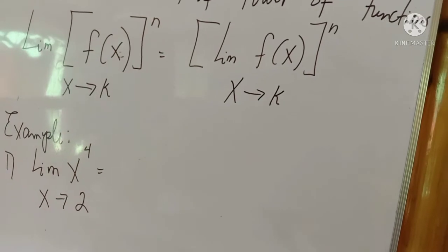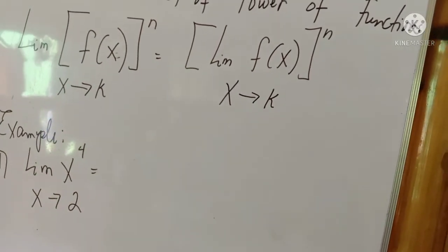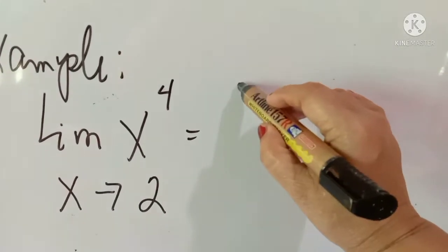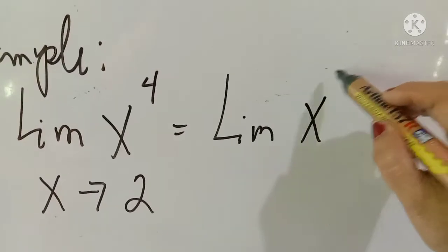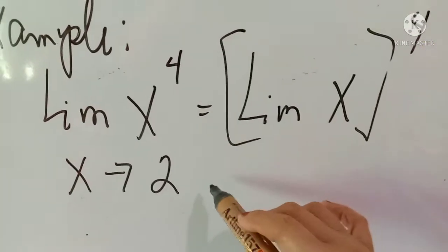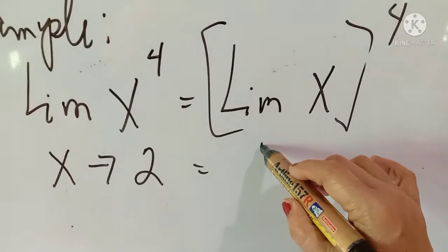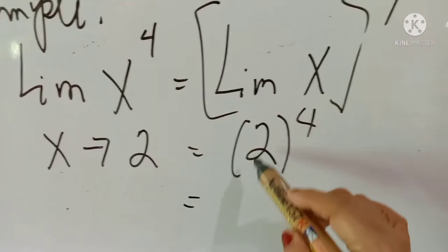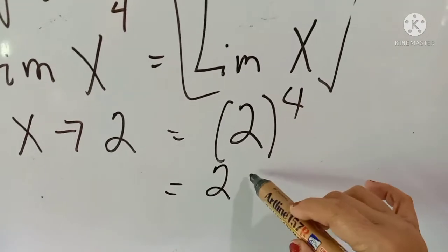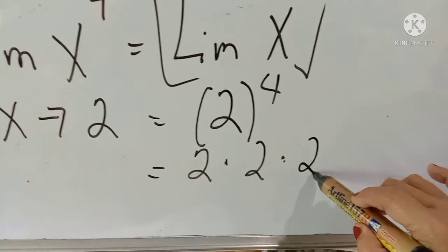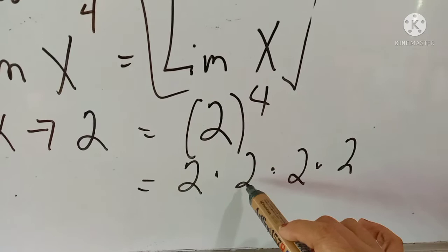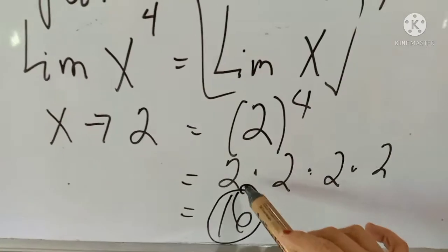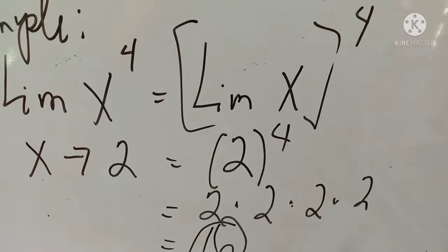Example number one: find the limit of x to the 4th power when x approaches 2. We apply the definition — the limit of x raised to the 4th power as x approaches 2. Since x approaches 2, we substitute: 2 raised to the 4th power. Simplifying: 2×2 = 4, 4×2 = 8, 8×2 = 16. So the limit of x to the 4th power when x approaches 2 is 16.